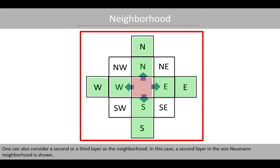One can also consider a second or a third layer as a neighborhood. In this case, a second layer in the von Neumann neighborhood is shown.